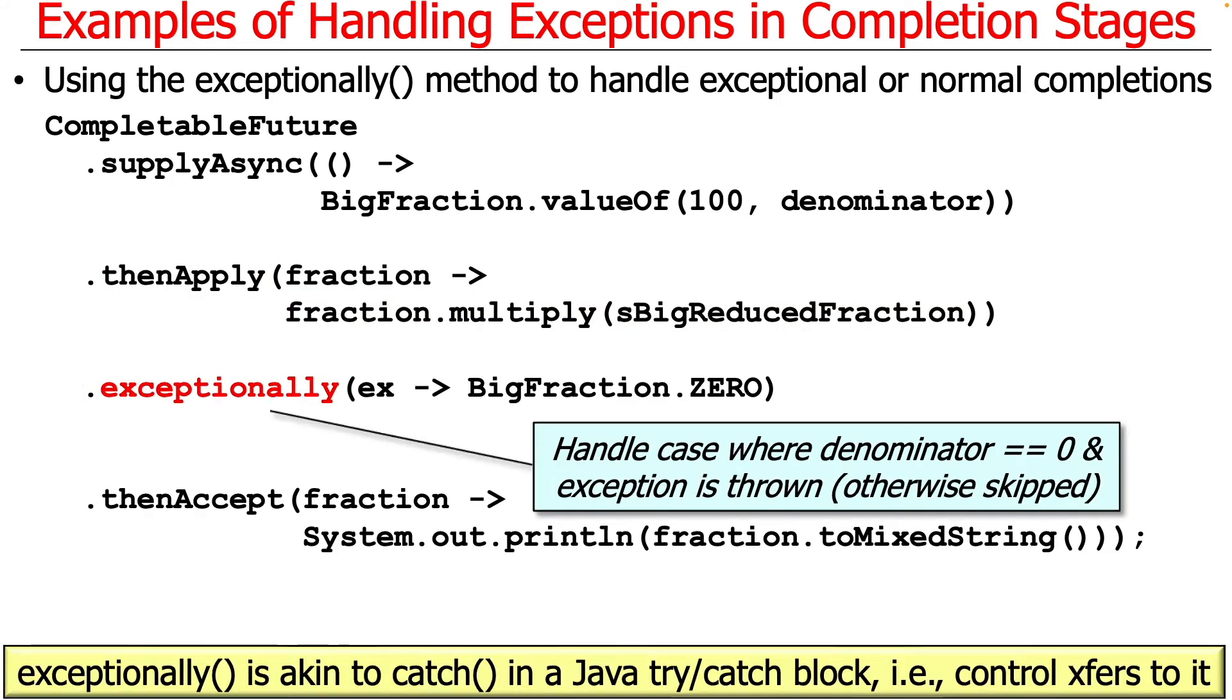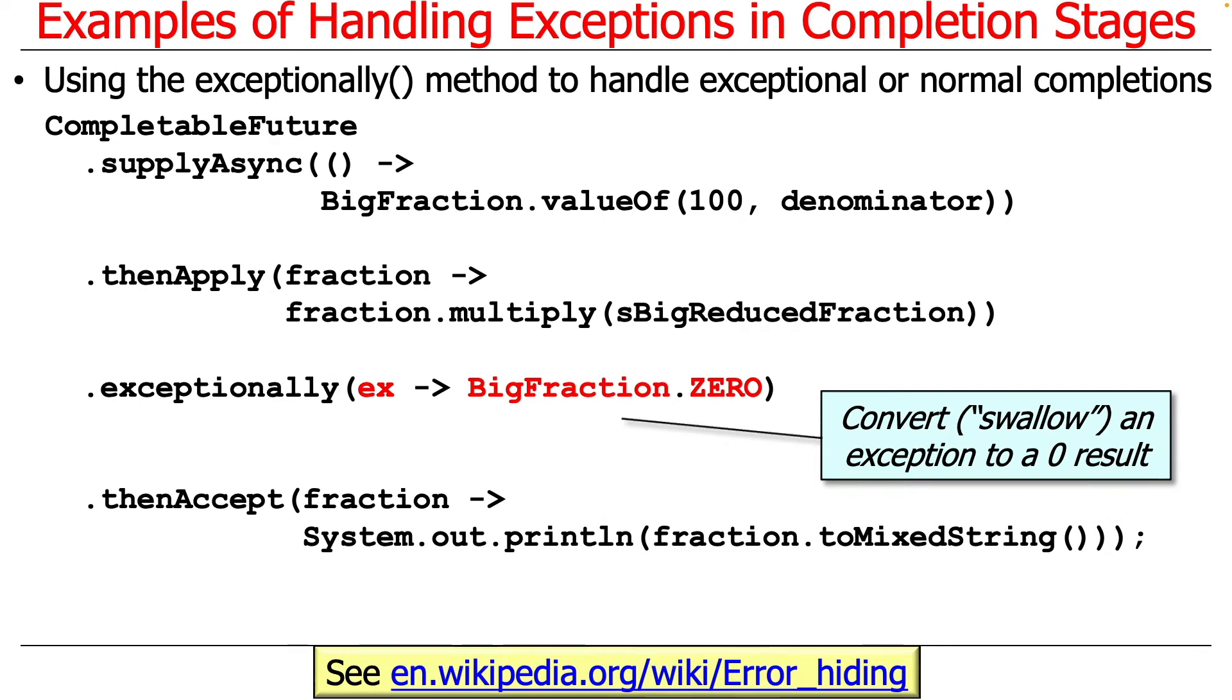However, if an exception occurs, if arithmetic exception is thrown, for example, then this action will be run. Exceptionally is a bit like a catch clause in a Java try-catch block. In other words, the control will transfer to it, and it gets a chance to handle the exception. In this case, what it's going to do is it's going to convert that exception to a zero. It's going to swallow the exception.